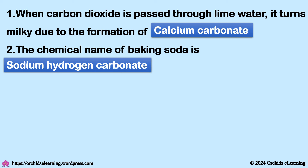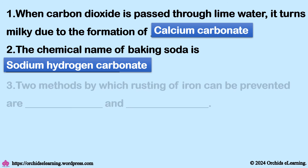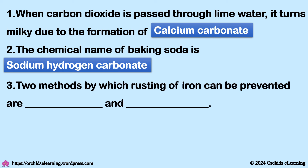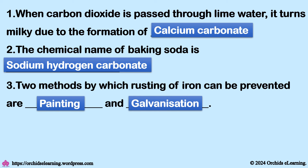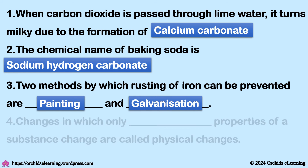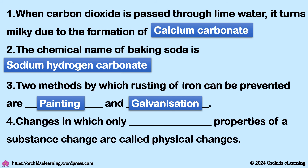The chemical name of baking soda is sodium hydrogen carbonate. Two methods by which rusting of iron can be prevented are painting and galvanization.